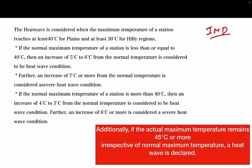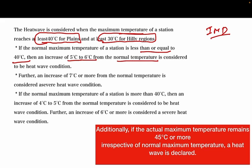For example, a situation is considered as a heat wave when the maximum temperature of a station reaches at least 40°C for plains, 30°C for hill areas. If the normal maximum temperature of a station is less than or equal to 40 degrees, then an increase of 5 degrees to 6 degrees from the normal temperature is considered as a heat wave condition. Further, the increase in temperature if it is 7 degrees from the normal temperature, it is also a heat wave condition.